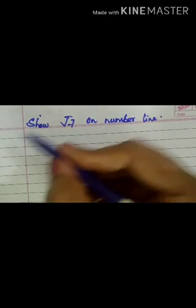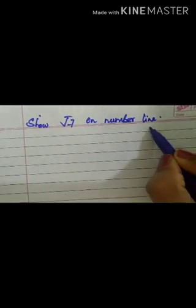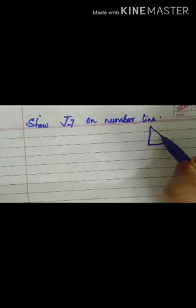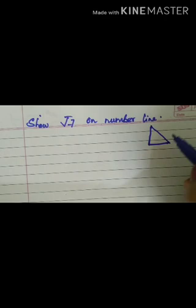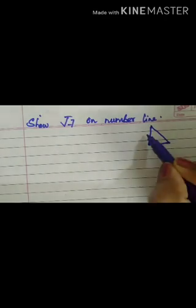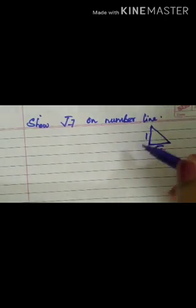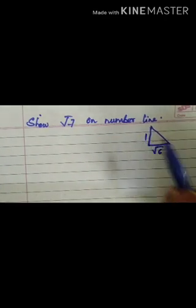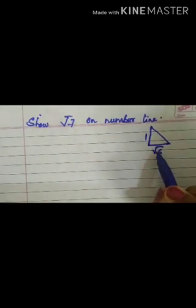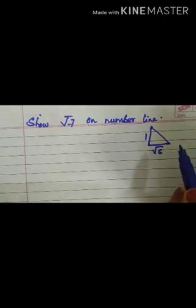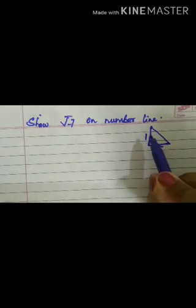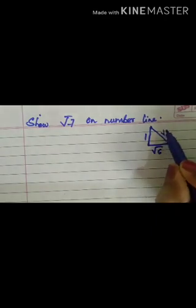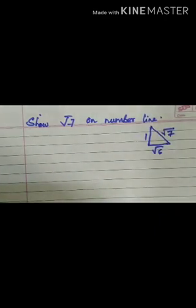To get √7 on the number line, if you take a right angle triangle, the base should be √6 and the height should be 1. Height we always take as 1 — keep that in mind. So √6 squared plus 1 squared gives us the hypotenuse as √7.